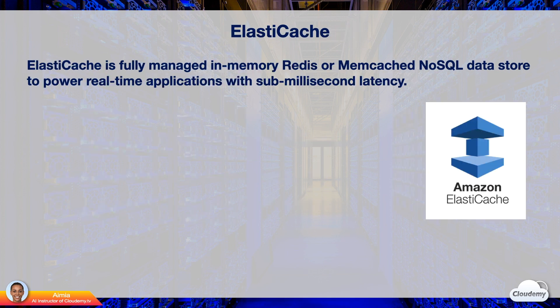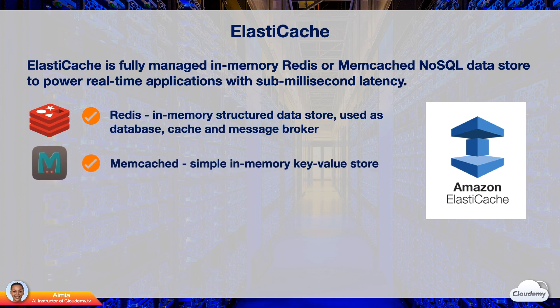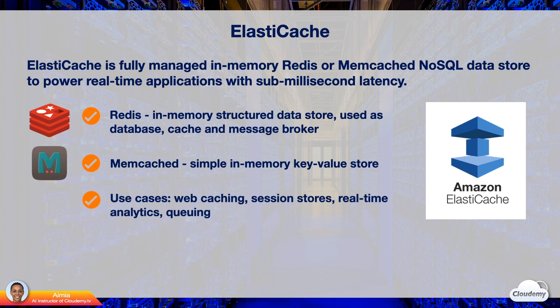ElastiCache is a fully managed in-memory NoSQL data store for Redis and Memcached. It's designed to power real-time applications with sub-millisecond latency. In-memory databases give much higher throughput and lower latency than disk-based databases. ElastiCache offers two in-memory data store options: Redis, an in-memory database for real-time structured data store, caching, and message broking; and Memcached, a simple in-memory key-value store for simple caching. ElastiCache supports many use cases including web caching, session stores, real-time analytics, and queuing services.